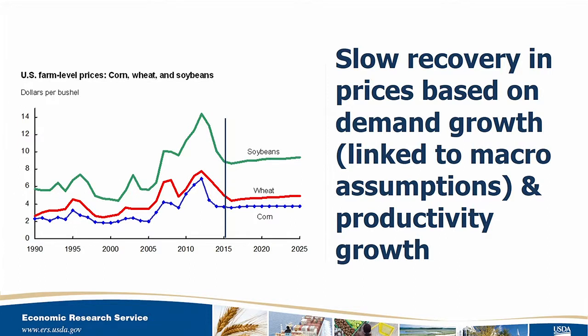That's the macroeconomic background, and they lead to a slow recovery in global demand for agricultural commodities. The USDA baseline also assumes rates of technological improvement continue to grow. Bringing demand and supply together implies slowly recovering prices. This shows U.S. farm prices for soybeans, wheat, and corn, with a line showing where the projection period starts. Among the three, soybean prices rise the most, reflecting increased demand for soy products linked to growing meat demand and to meet increased demand in developing countries.